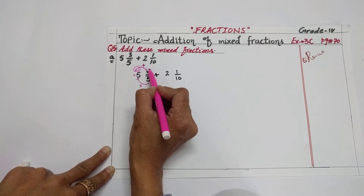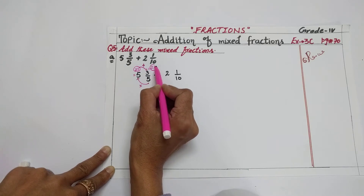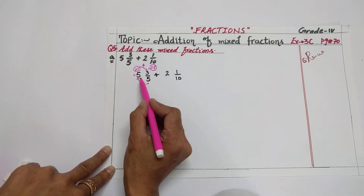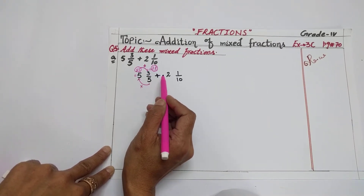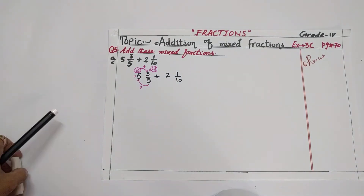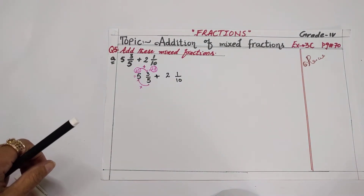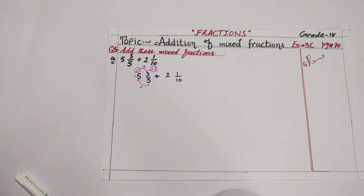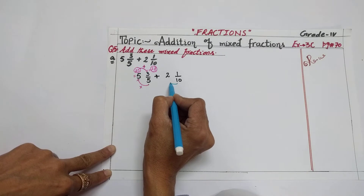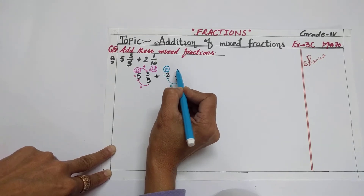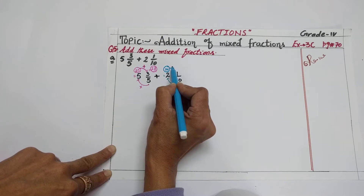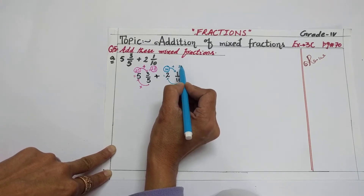5 fives are 25, and 25 plus 3 is equal to 28. We will follow the same step with the second fraction. The denominator is 10, multiply this denominator by 2 — 10 twos are 20 — and 20 plus 1 is equal to 21. Clear?